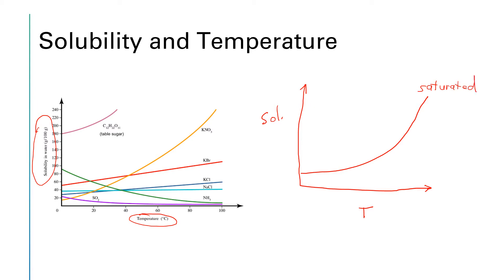So this curve represents the maximum amount of solute that will dissolve at any given temperature under normal conditions. If we were to look instead at the area underneath the curve, so this area that I'm hatching in in blue, this area underneath the curve represents an unsaturated solution.